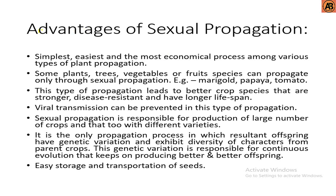The advantages of sexual propagation are: it is the simplest, easiest, and most economical process among various types of plant propagation. Some plants, trees, vegetables, or fruit species can propagate only through sexual propagation — for example, marigold, papaya, and tomato. This type of propagation leads to better crop species that are stronger, disease resistant, and have a longer lifespan.